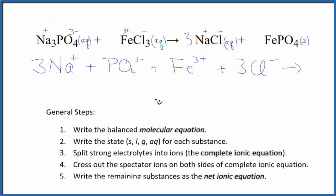For the products, we have 3 sodium ions, just like in the reactants, and then 3 chloride ions. Because this is a solid, we don't split solids apart in net ionic equations. So we're just going to write FePO4. This is the total or complete ionic equation.